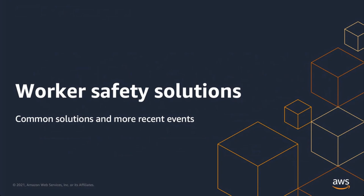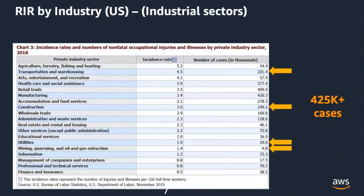I looked at how many worker safety incidents have been reported, using data from the US Bureau of Labor Statistics from 2018. Looking at categories I'd consider industrial IoT, there are over 425,000 cases a year. And just above that, manufacturing adds an additional 430,000 cases, which I think could be directly attributable to IoT. Worker safety is not only important to ensure workers are safe, but there's a significant amount of corrective action we can take to hopefully reduce these incident rates across different industries.